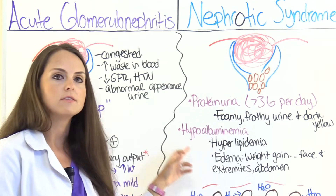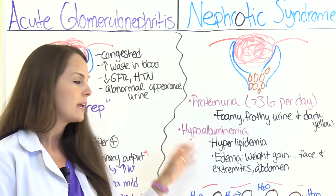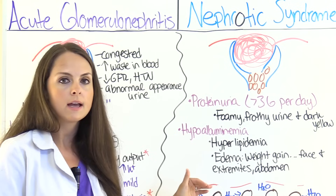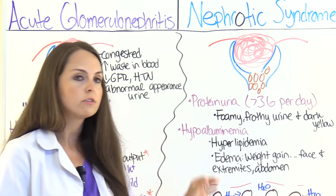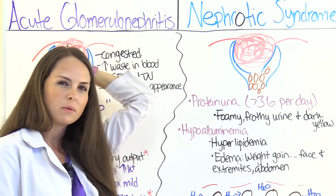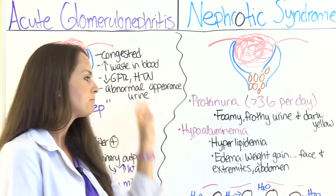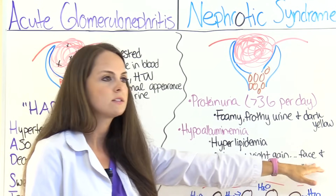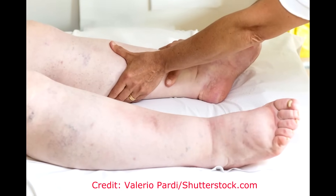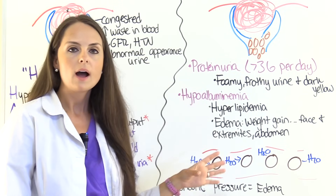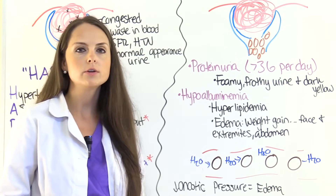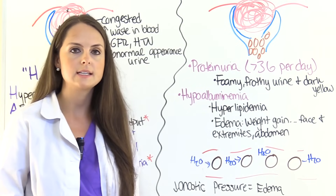The low albumin level also leads to a lot more edema and noticeable weight gain in nephrotic syndrome compared to acute glomerulonephritis, where only mild protein is lost. The swelling can start in the face and around the eyes, then progress to the extremities — legs, ankles, hands — and the abdomen, causing ascites.